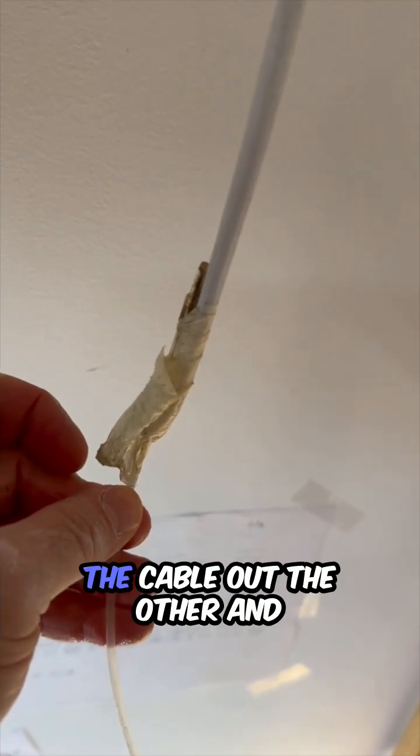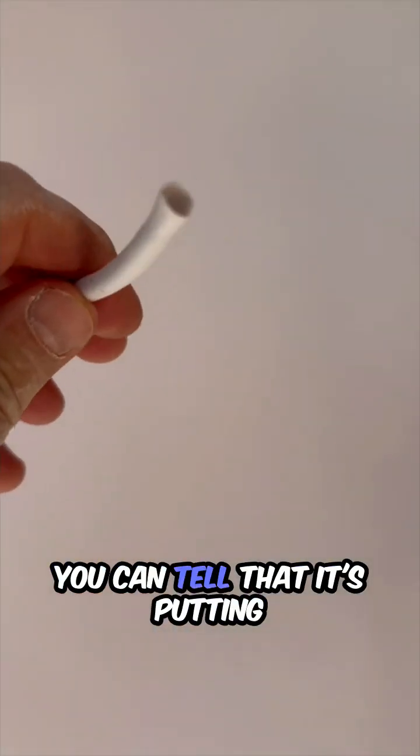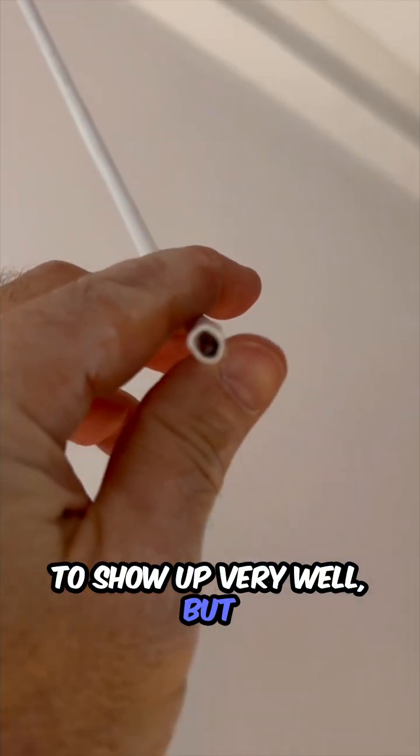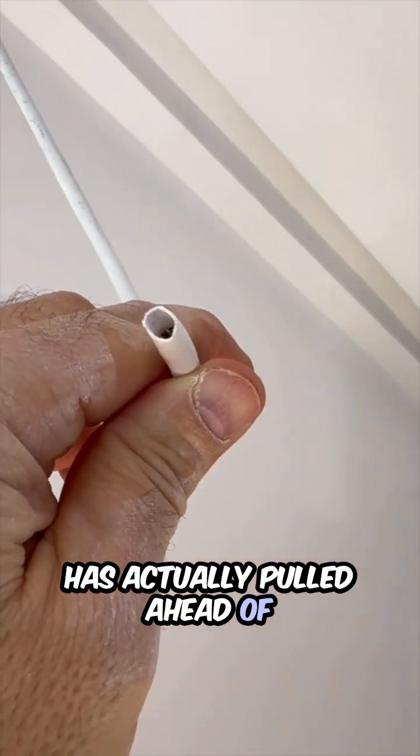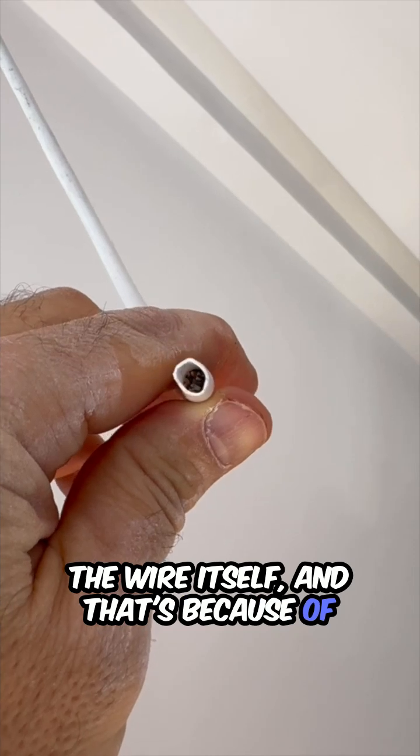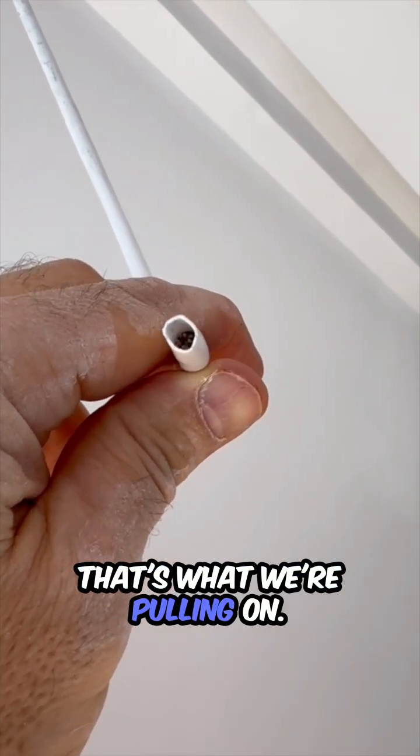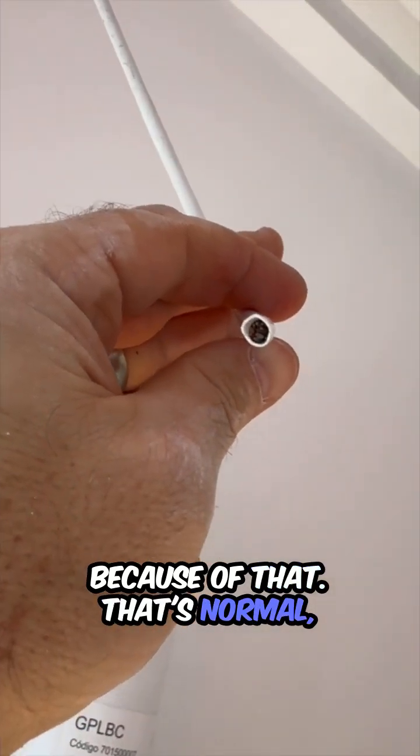One other thing to note is you can see the cable housing has actually pulled ahead of the wire itself, and that's because of the stress that we put on the cable. We're obviously putting the stress on the jacket - that's what we're pulling on - and the wires themselves are retreating inside the jacket because of that. That's normal.